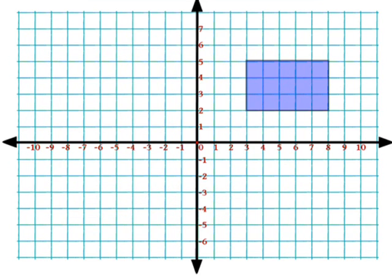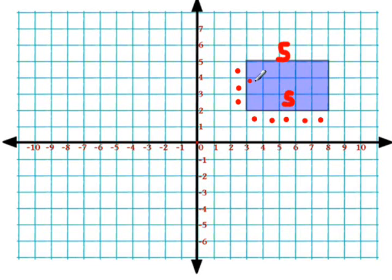Let's take a look at another example. So here we have a base of one, two, three, four, five units. We have a height of one, two, three. So the perimeter of this rectangle would be 16 — we would just add up the sides. And again, just be careful that you don't count up the intersection points.